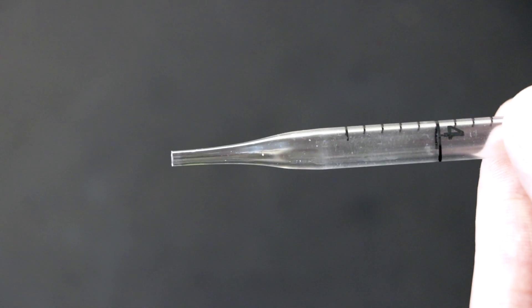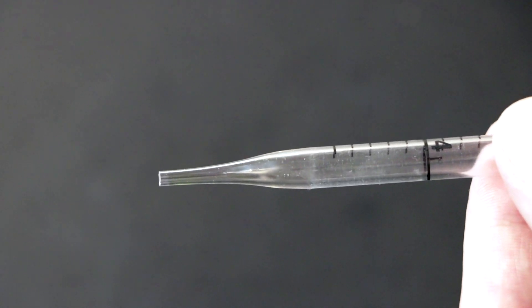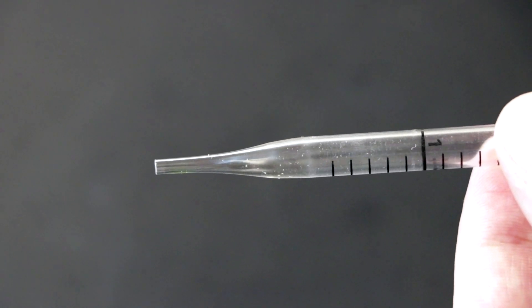The 5 mL mohr pipette has two scales on opposite sides of the pipette. We will be using the scale with smaller numbers.